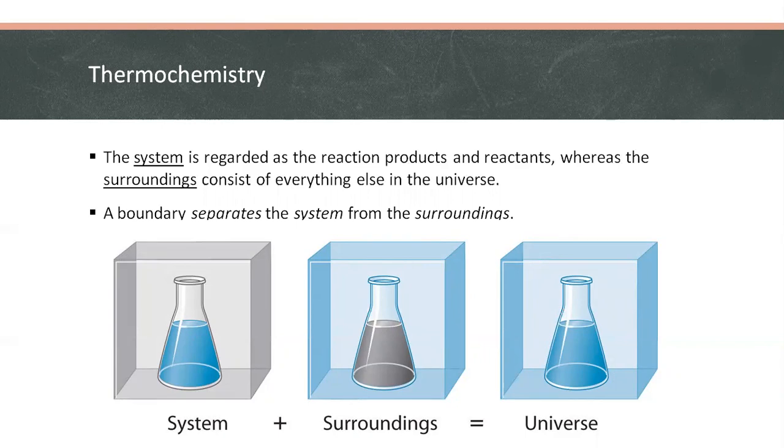The surrounding is the other space inside the box aside from the flask. And the whole composition of the box is what we call universe, including the system and the surroundings.